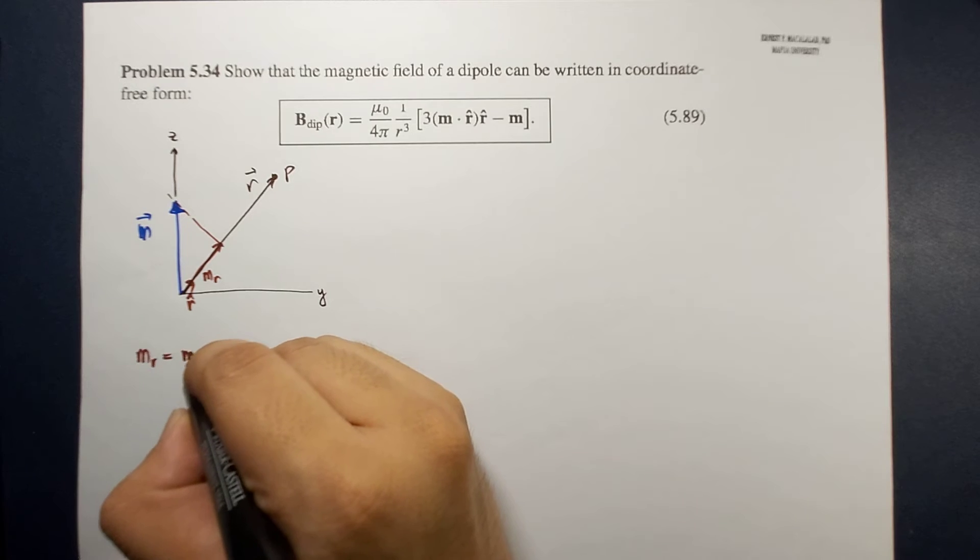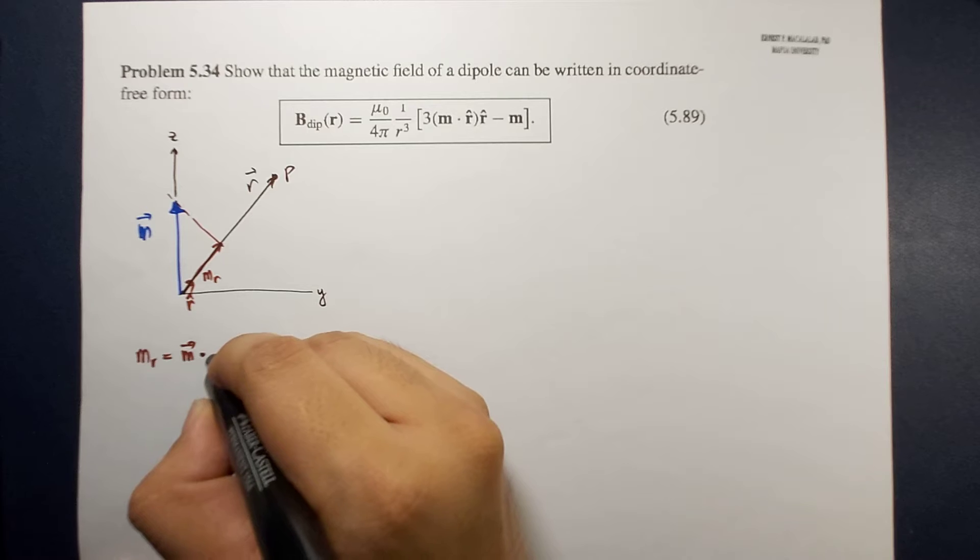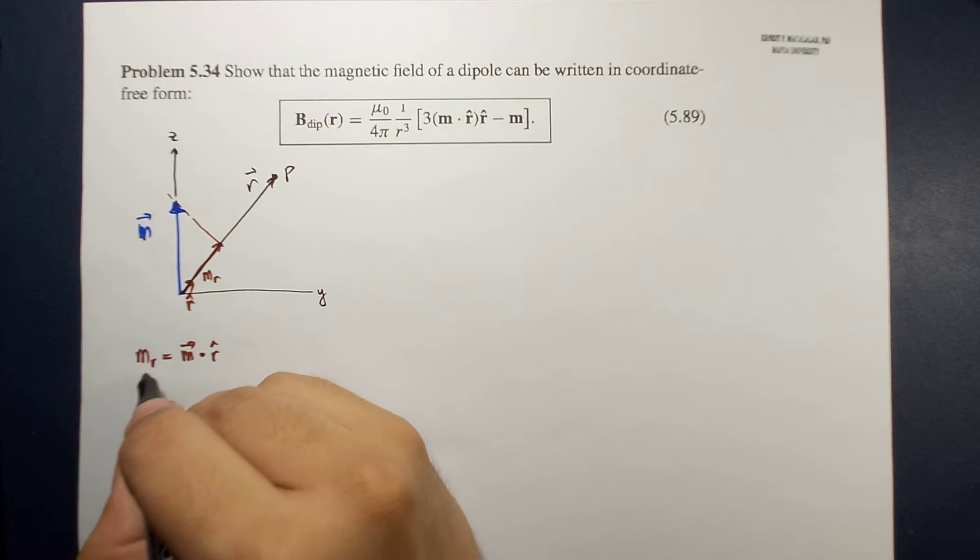So this is m. By definition of your dot product, m vector dot r hat would be your m_r.